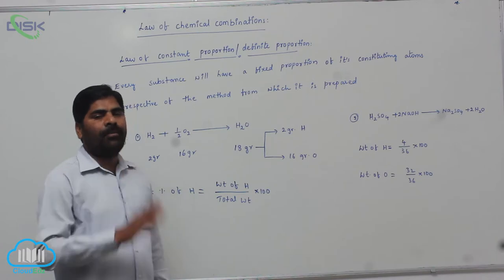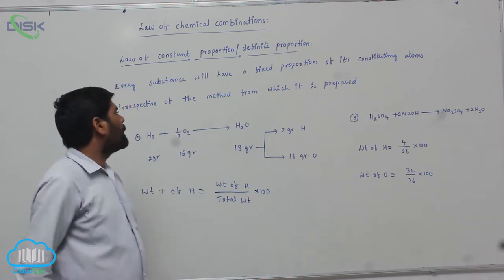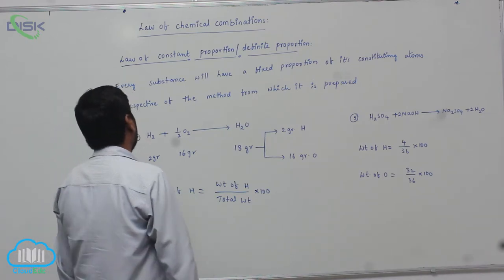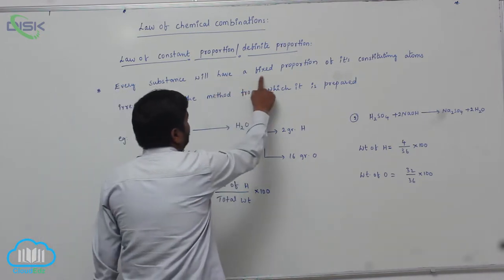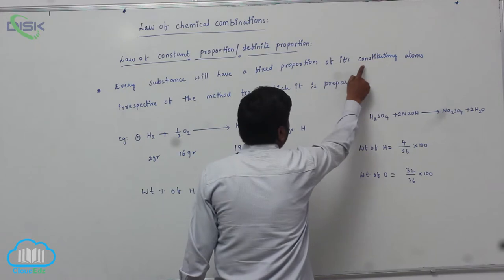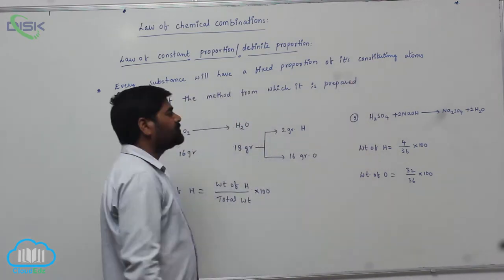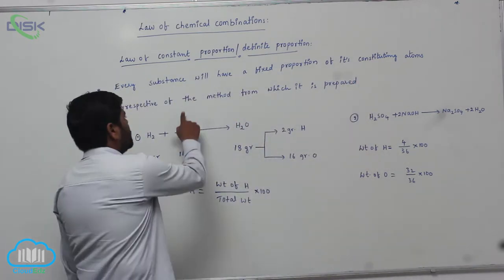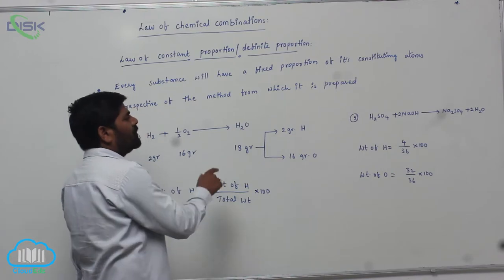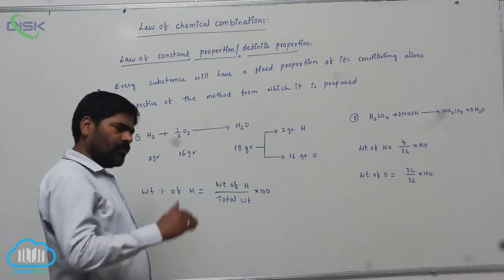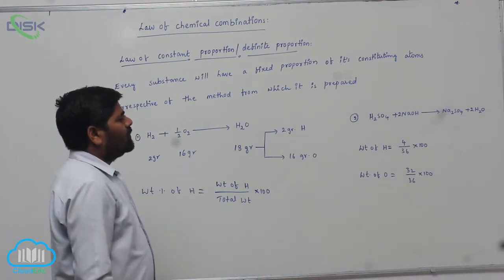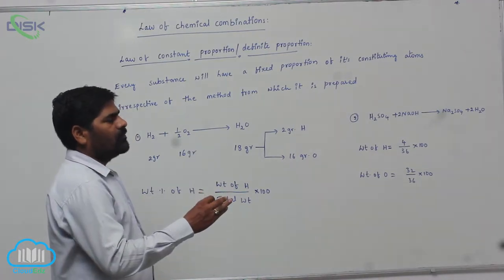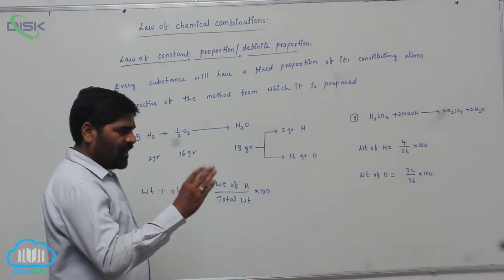So therefore, to form a compound that is 18 grams, that is the reason why every substance will have a fixed proportion of its constituent atoms irrespective of the method from which it is prepared. Whatever the method, if the water is prepared, the ratio of atoms is always fixed.